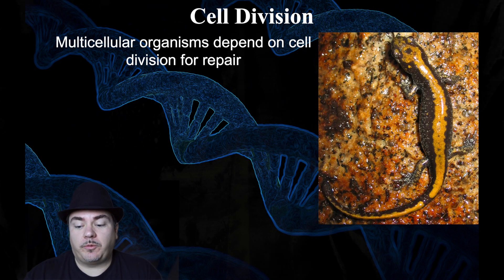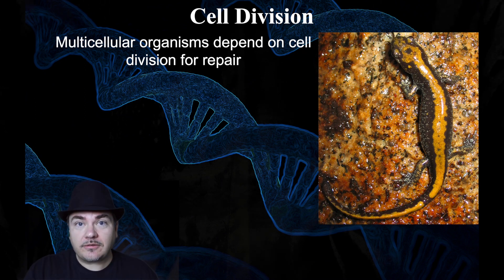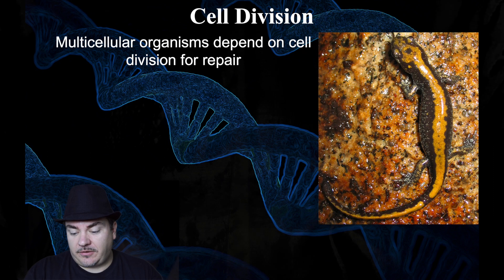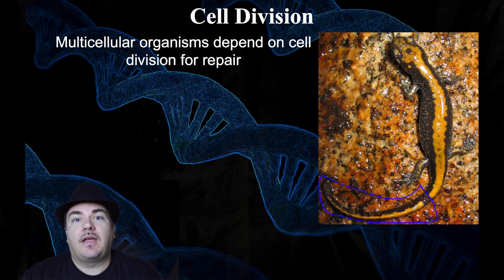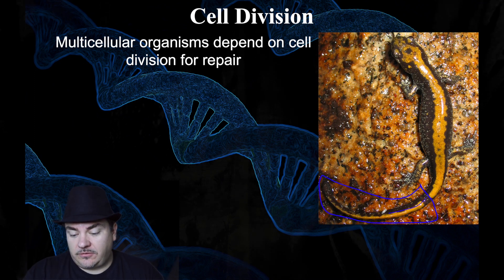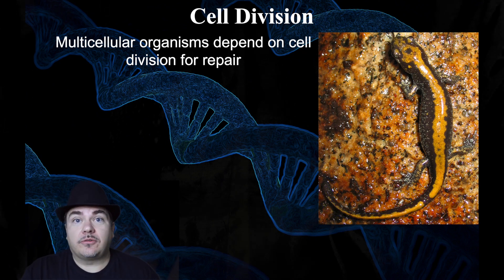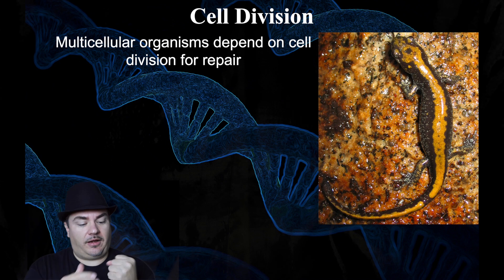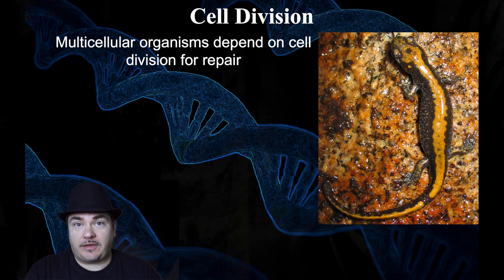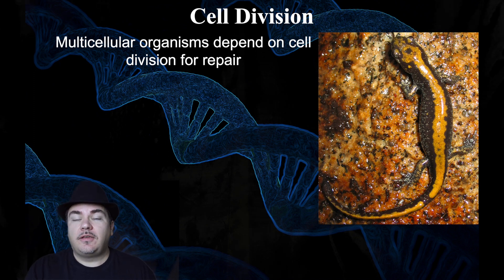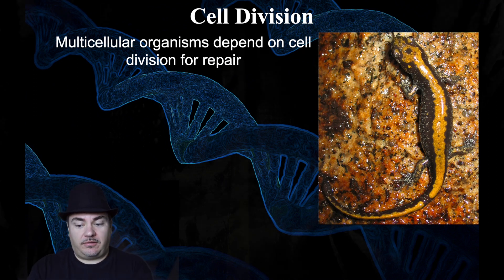We can also use cell division for repair or regeneration. For example, this salamander here — or living in Florida, you've probably seen those little lizards crawling around. If their tail gets ripped off, they can regrow an entire new tail. The cells start dividing to create new cells to regrow the tail. As a human, unfortunately, if you lose an appendage, we can't regrow it entirely. But we do use cell division for repair — for example, if you get a cut in your skin, the skin cells around the cut start to divide to grow over that cut and heal the wound.